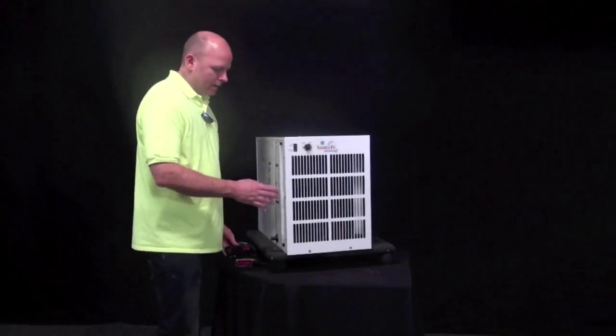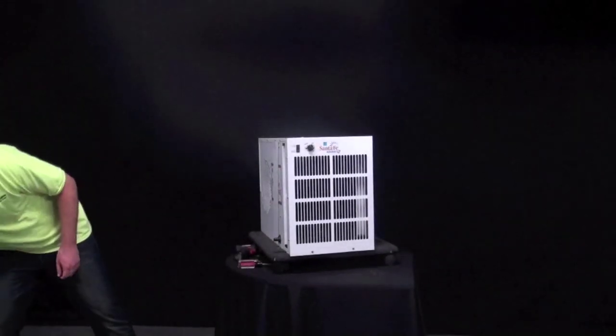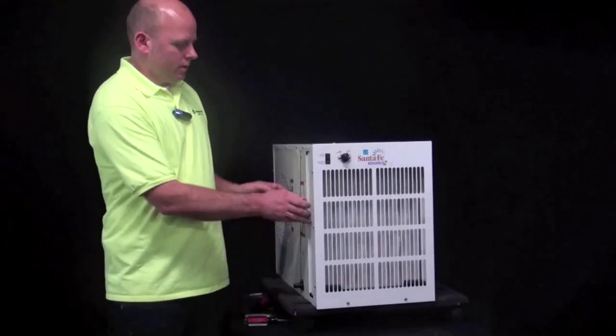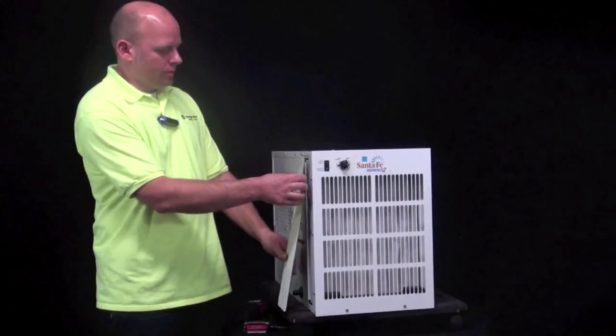Okay, once you have the grille back on, now you can get your air filter and slide that back in the unit and then put the magnet door over the air filter.